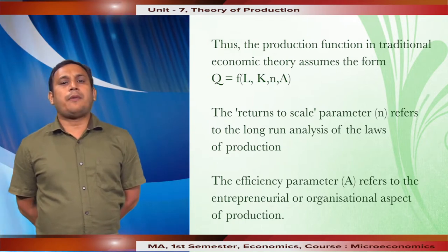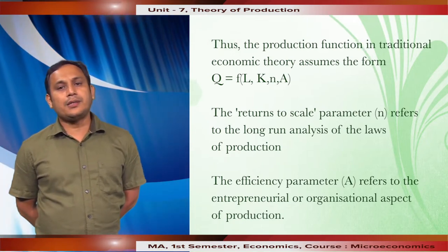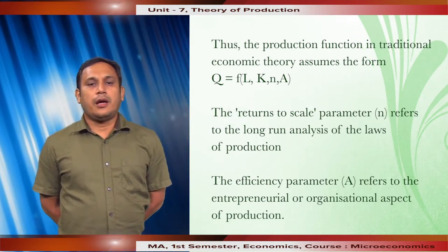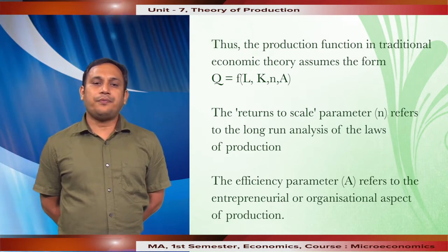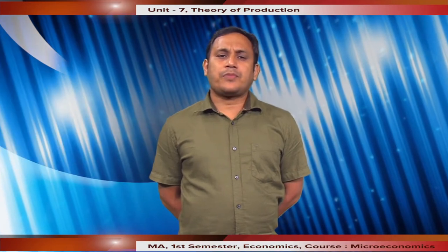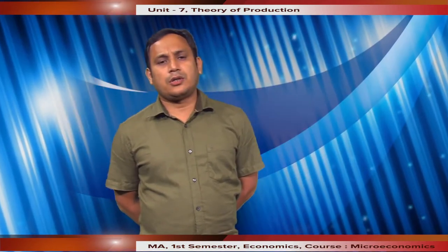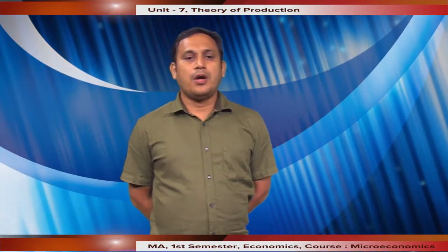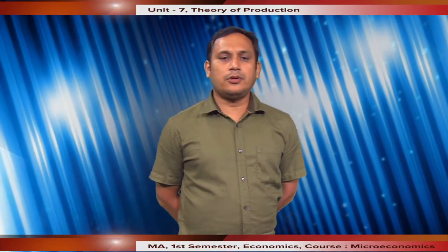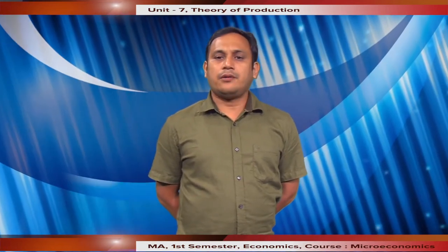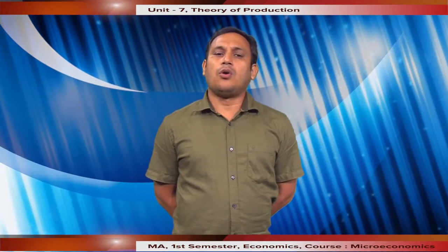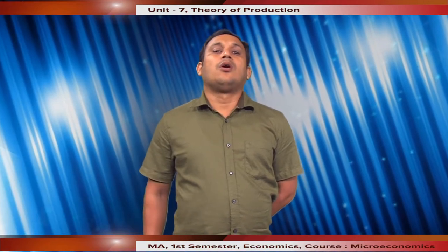The return to scale parameter n refers to the long-run analysis of the laws of production, and the efficiency parameter refers to the entrepreneurial or organizational aspect of production. Graphically, a production function is presented on a two-dimensional graph, where the relevant variables are shown either by movement along the curve that depicts the production function or by a shift of this curve.